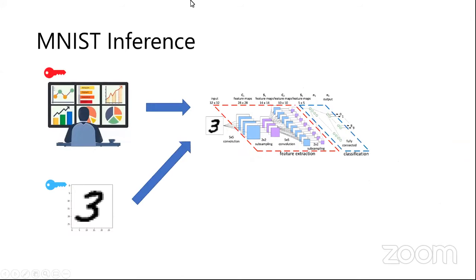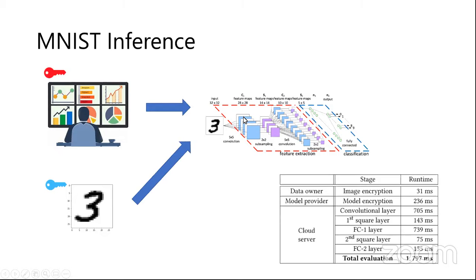Our multi-key HE implementation is based on SEAL. Ciphertext operation complexity grows roughly quadratically with the number of parties, as expected. For a small number of parties, the overhead is not too large compared to single-key HE. We demonstrated oblivious inference using an MNIST model with two-key HE in about less than two seconds.